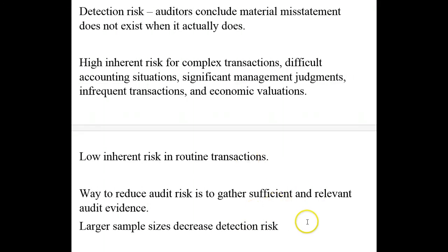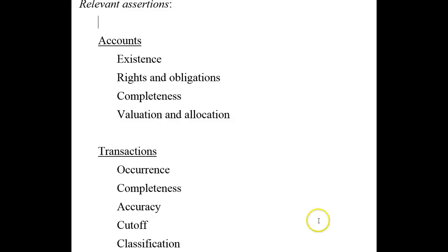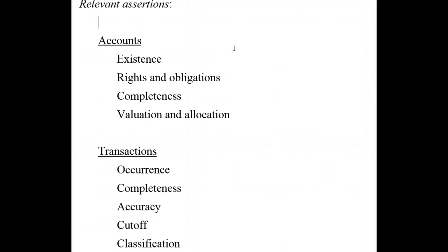Now that we've discussed audit risk, detection risk, inherent risk, and control risk, let's talk about relevant assertions. Management is responsible for the fair presentation of the financial statements in accordance with GAAP. When they make these assertions, management is making assertions about each of their financial statement components — about their accounts, their classes of transactions that occur during the period, and that their presentations and disclosures are proper.